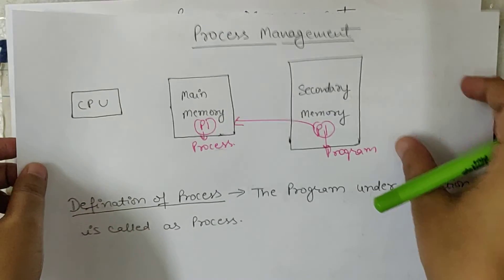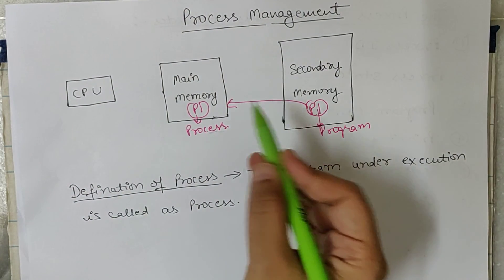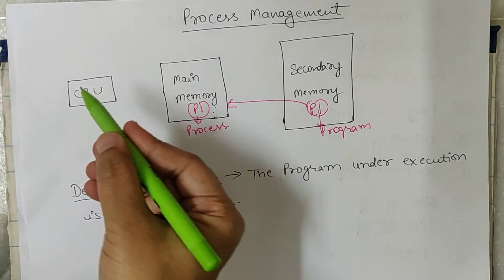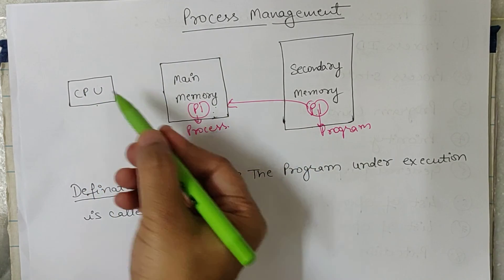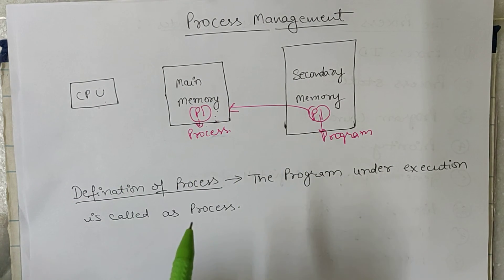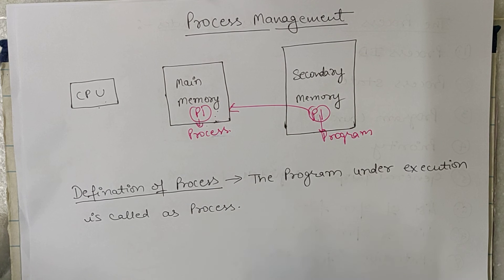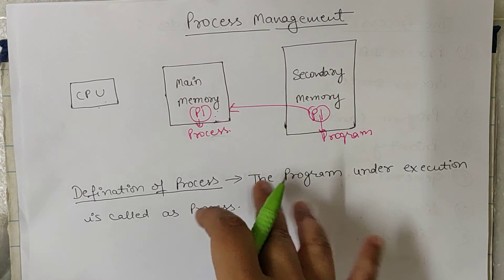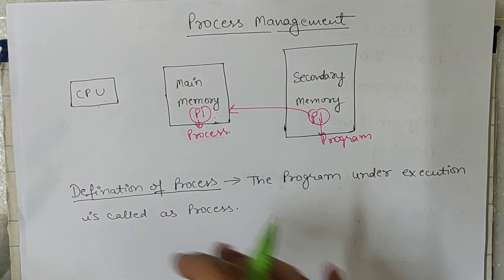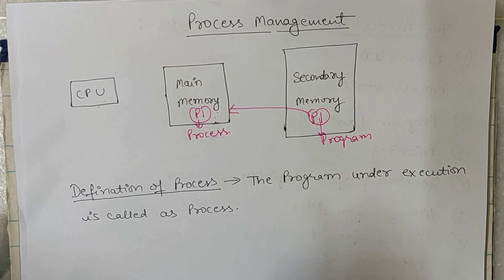Who picks up a program from secondary memory to main memory, and who assigns the CPU to a particular process? This is all done by schedulers — CPU schedulers. What schedulers are and the types of schedulers will be discussed in the next tutorial. I hope the term process and the attributes of a process are clear now.